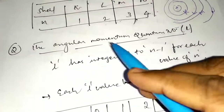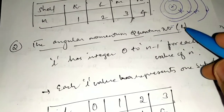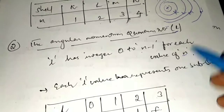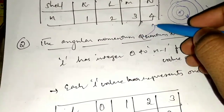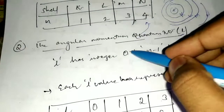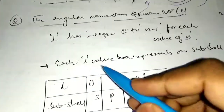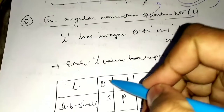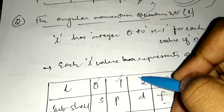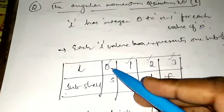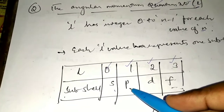The second quantum number is the angular momentum quantum number, represented by the small letter L. L has integer values ranging from 0 to N-1 for each value of N, so L depends on N. Each L value represents one subshell. The values of L give us the subshell: 0 indicates the S subshell, 1 indicates the P subshell, 2 the D subshell, and 3 the F subshell.